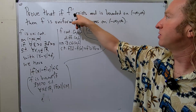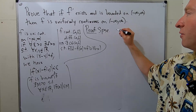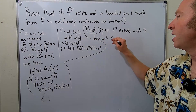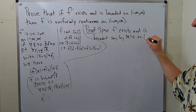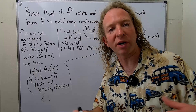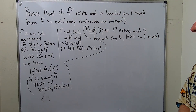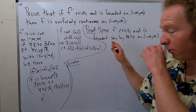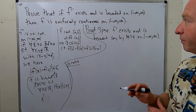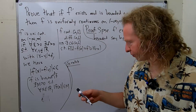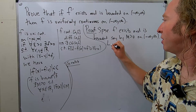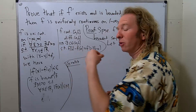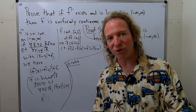Proof. Suppose the derivative exists and is bounded, say by m greater than zero on the real line. We can assume m is positive — if it's zero, just add one. Now we have to prove it's uniformly continuous. I'm going to do some scratch work on the side. We want to show uniform continuity, so we start by letting epsilon be greater than zero — that's the beginning of the definition. But now I have to choose my delta.